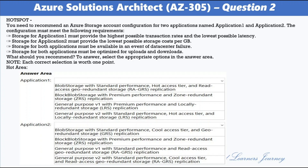For Application 1, the options are: Blob Storage with Standard Performance, Hot Access Tier and Read Access Geo-Redundant Storage Replication; Block Blob Storage with Premium Performance and Zone-Redundant Storage Replication; General Purpose V1 with Premium Performance and Locally Redundant Storage Replication; General Purpose V2 with Standard Performance, Hot Access Tier and Locally Redundant Storage Replication. The correct option is Block Blob Storage with Premium Performance and Zone-Redundant Storage Replication. Application 1 requires high transaction rates and the lowest possible latency, so we need to use premium, not standard.